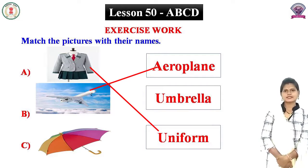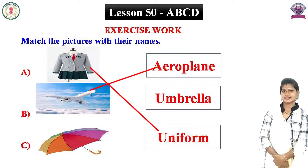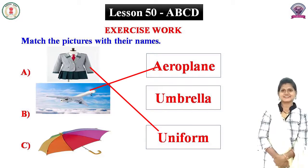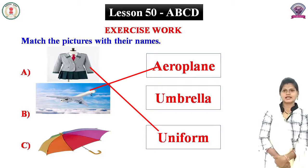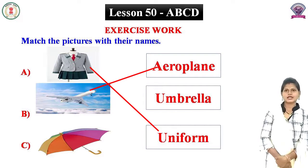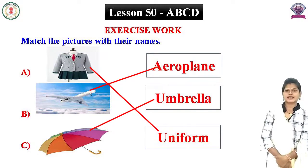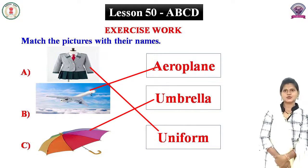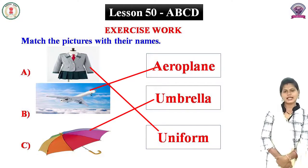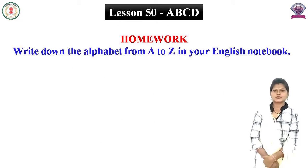Look at the third picture. Third picture mein aapko kya dikha raha hai? Yes, umbrella. Umbrella kahan par likha hua hai? Second word. Third picture ko second word U, M, B, R, E, L, L, A ke saath milaan dijiye.